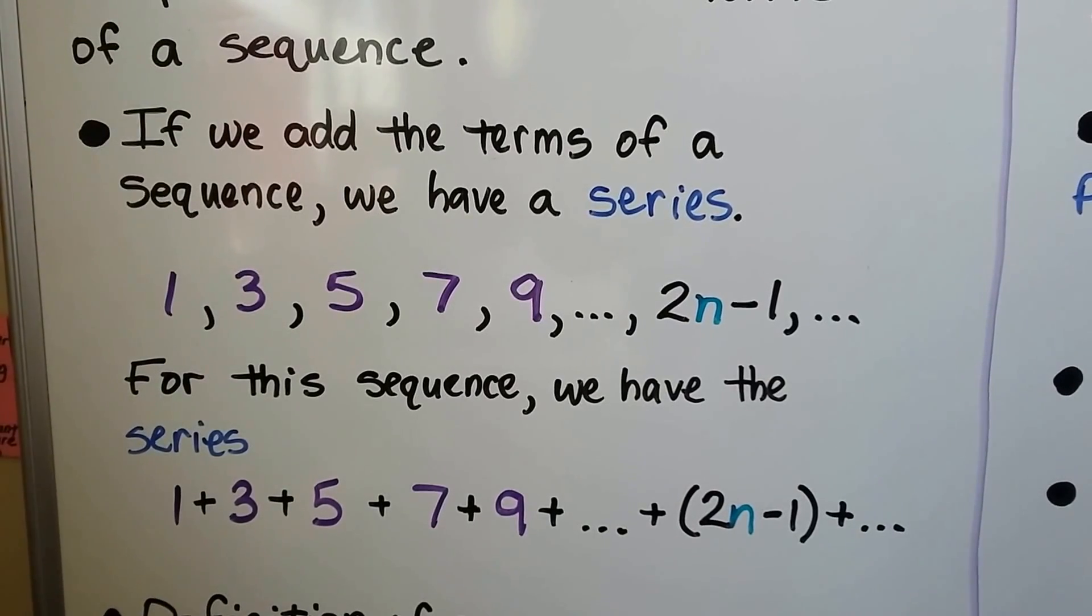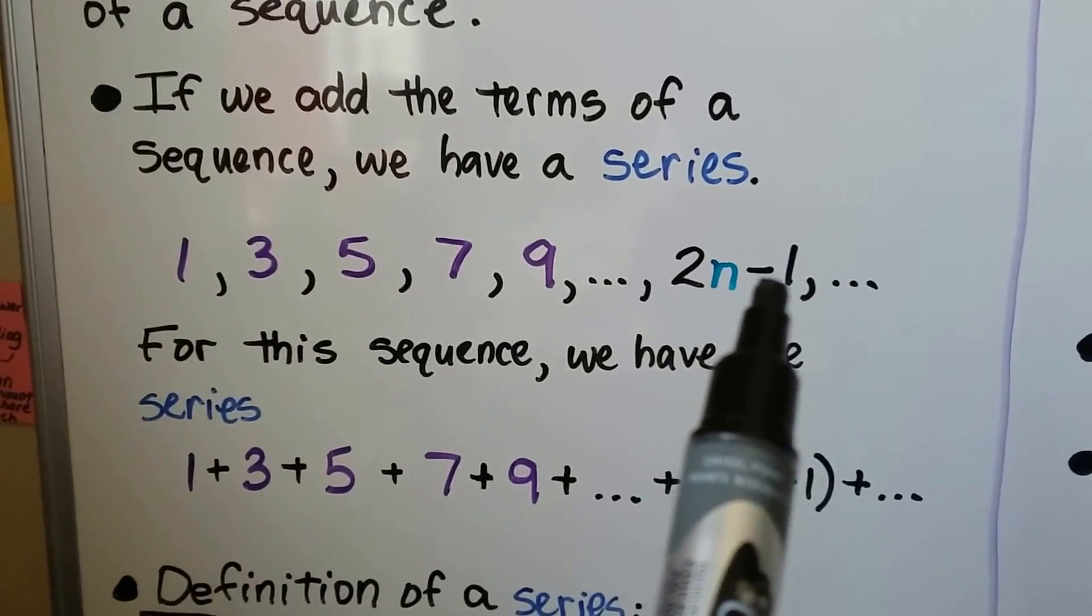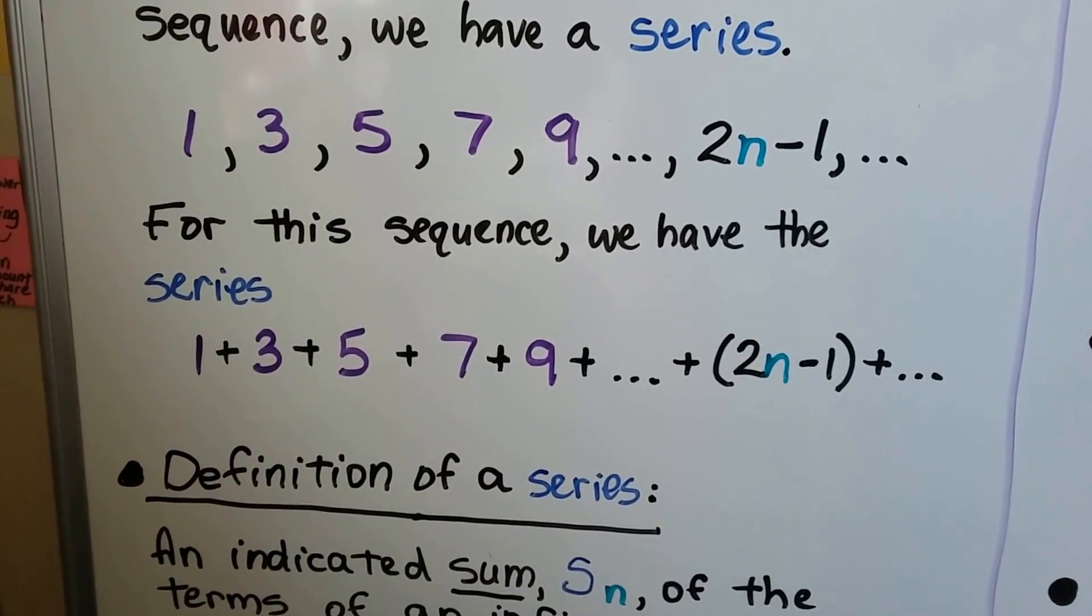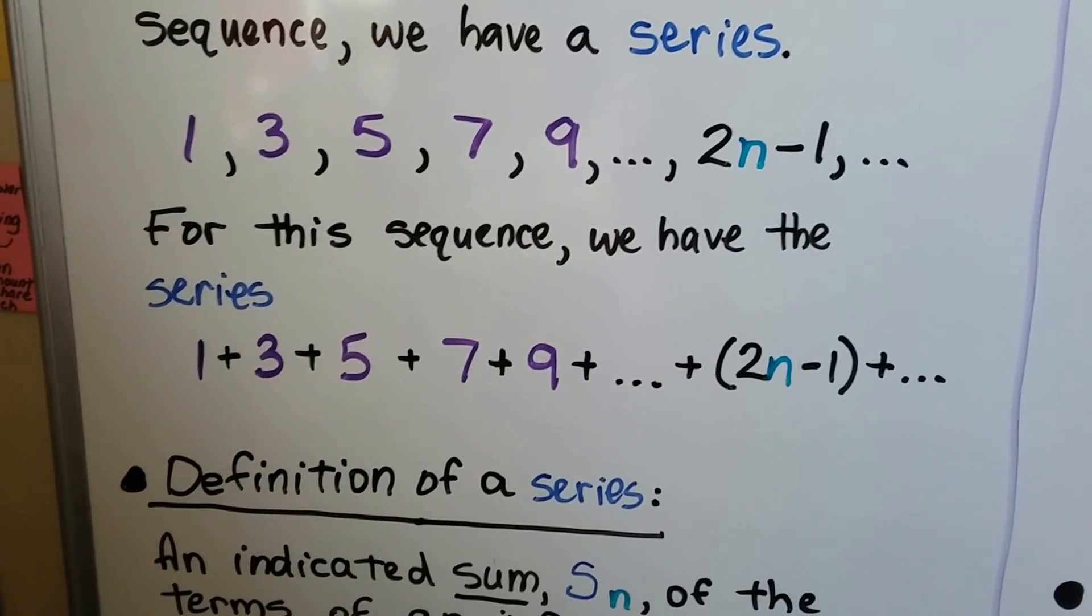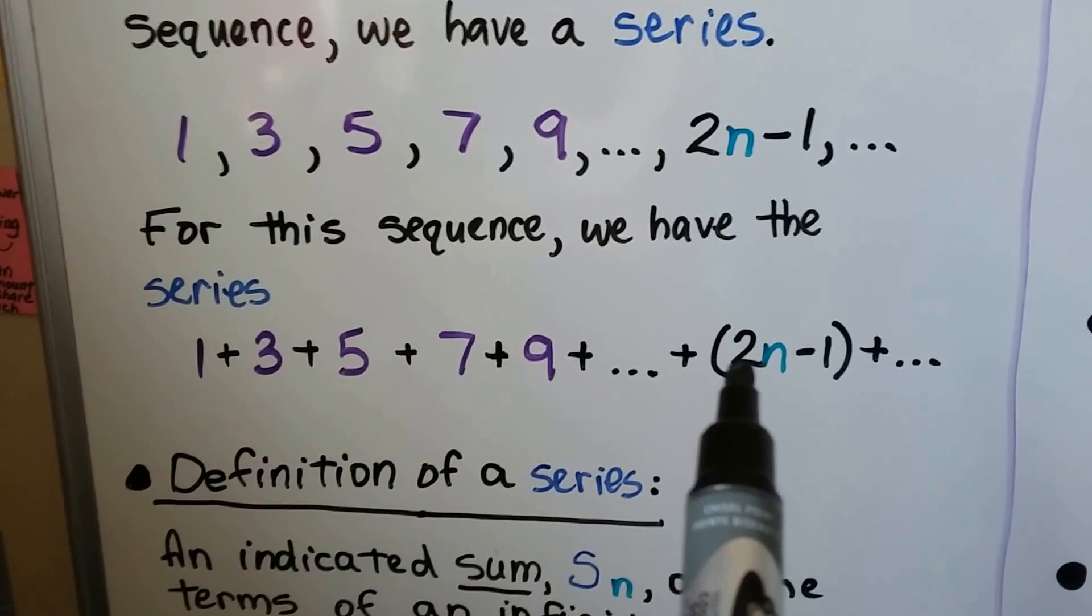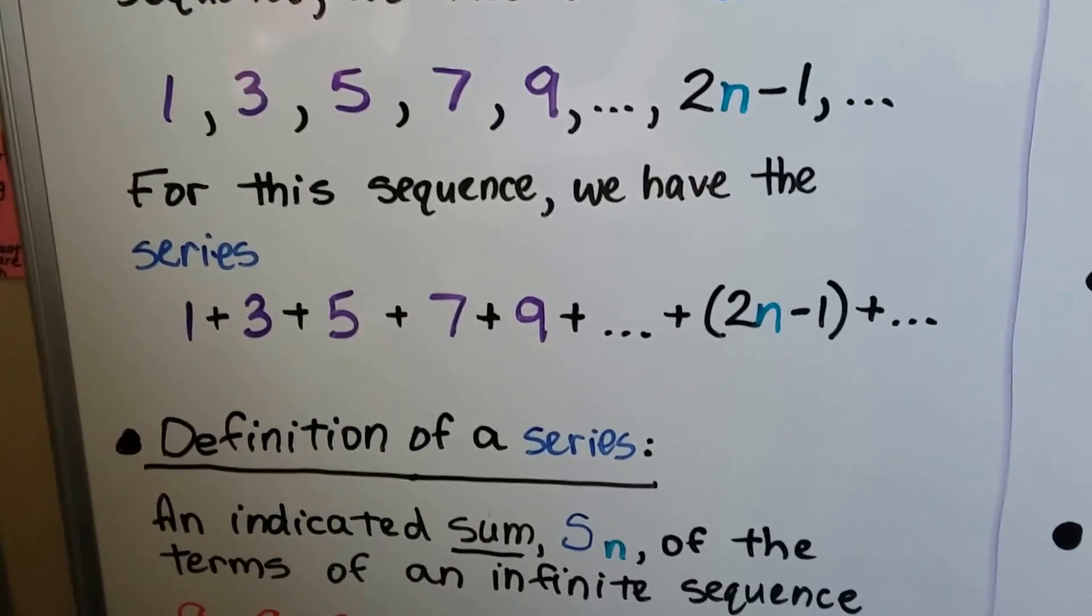For example: 1, 3, 5, 7, 9, and the nth term would be 2n - 1. For this sequence, we have the series 1 + 3 + 5 + 7 + 9 + ... + (2n - 1) + ...